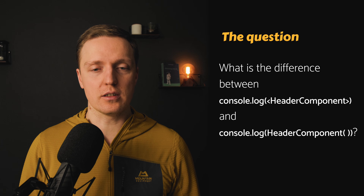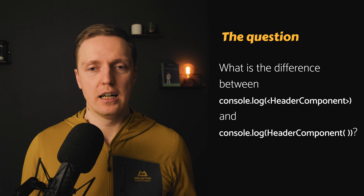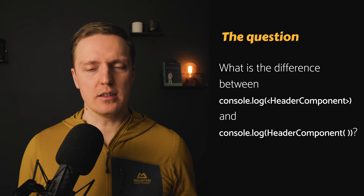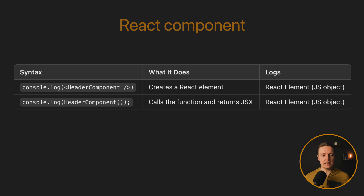It is extremely important to always have the package-lock file and commit it to Git. What is the difference between console.logging a Header component and console.logging Header component when you are calling it? The main difference is that the first will just console.log a variable, because essentially this is a variable. The other one will console.log the result of executing the component, which means a component object.